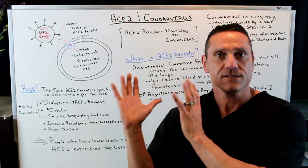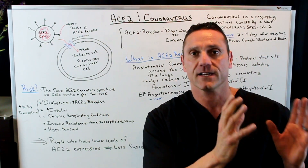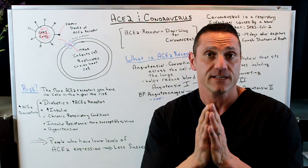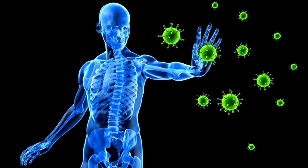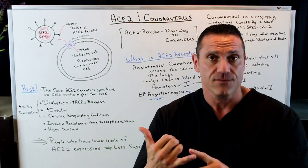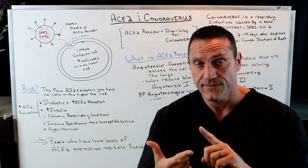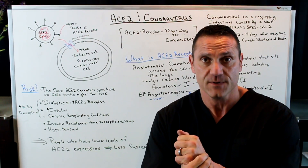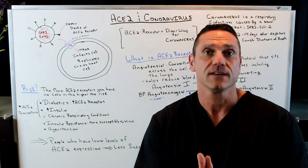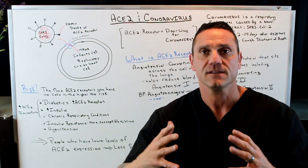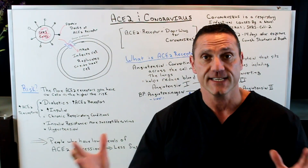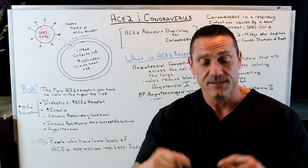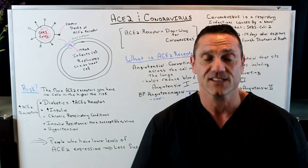So this is just an overview of the ACE2 receptor and the coronavirus. Try to keep yourself healthy. The main goal is to wash your hands daily, but also do what you can to boost your immune system — vitamin D3, selenium, zinc, vitamin C, vegetables, wash your hands. Anything you do to boost your immune system is going to lower the effect the coronavirus could have on your system. I hope this helps. If you have any questions or comments, please leave them below and I'll see you in the next video. Thanks for watching.